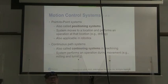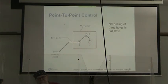Our motion control systems, we have point-to-point systems, which we also call positioning systems. The system moves to a location and it does an operation at that location, whether that's drilling, milling, reaming, whatever. This is also used in robotics. We also have continuous path systems, also called contouring systems. And the system can perform the operation during movement. Milling and turning fall into that situation.